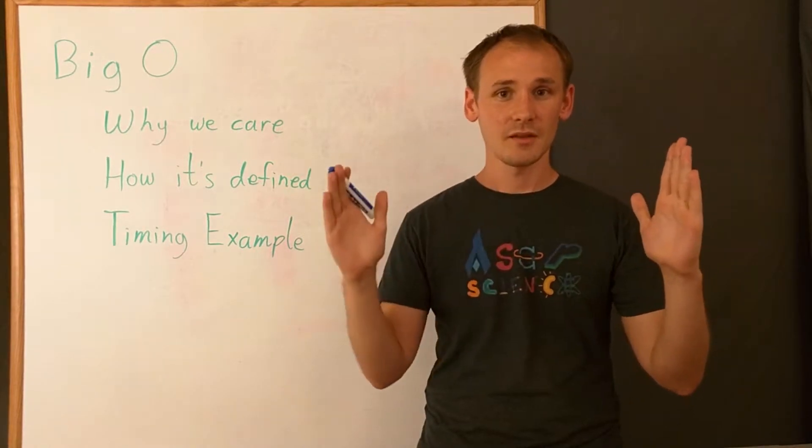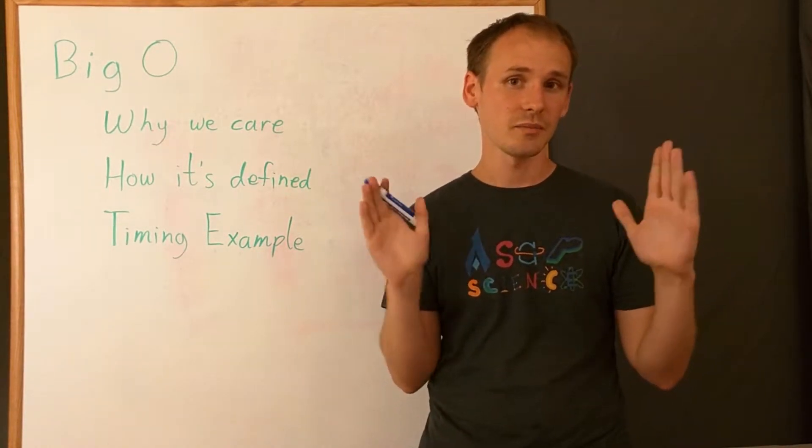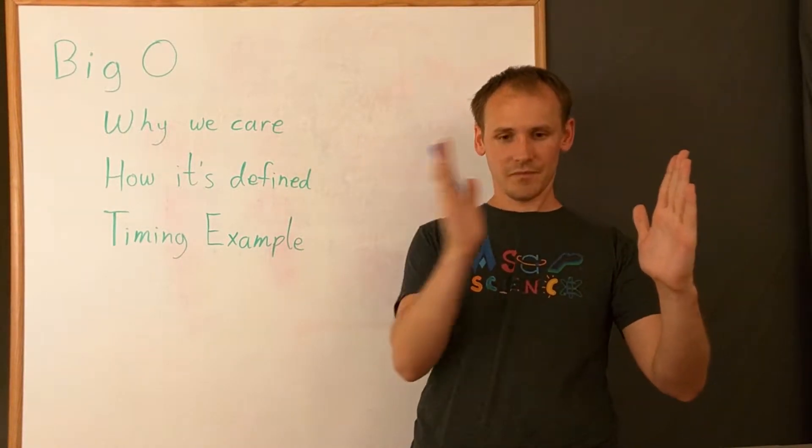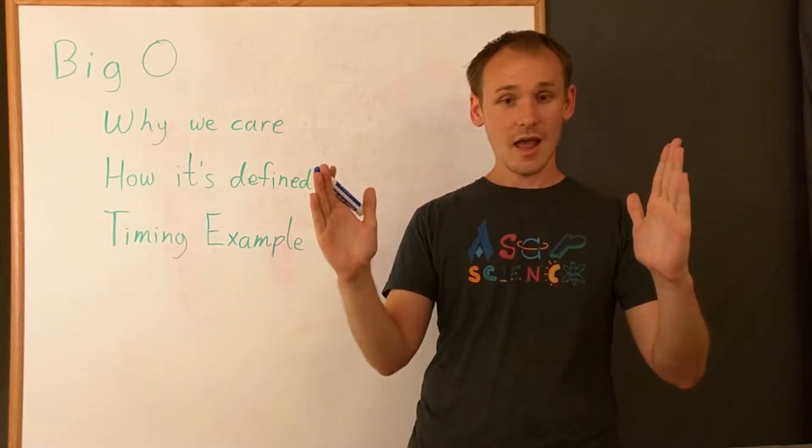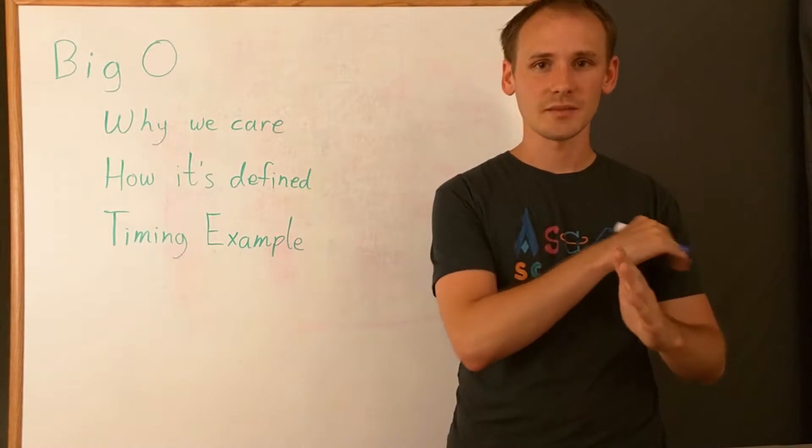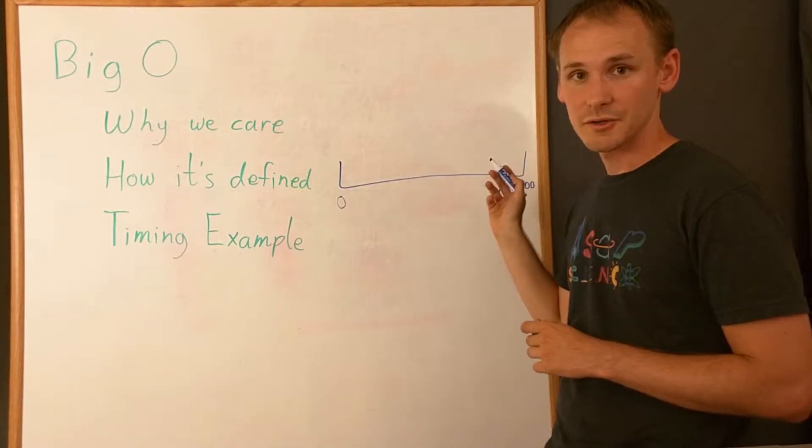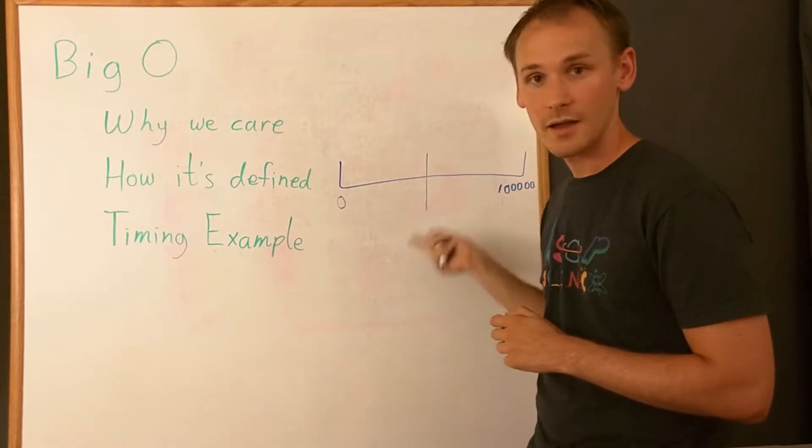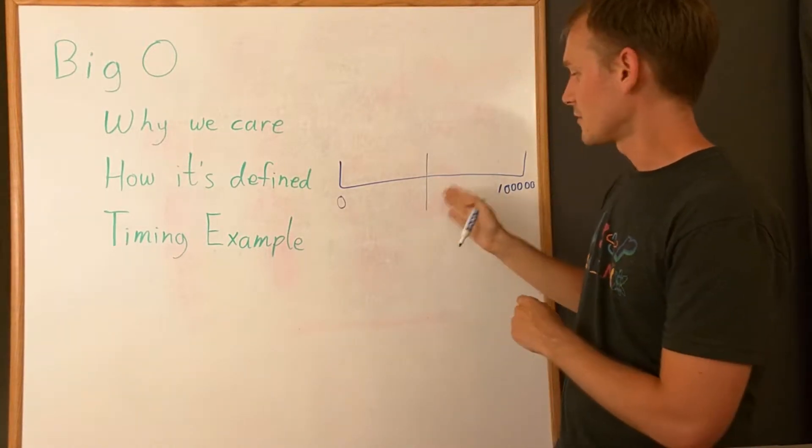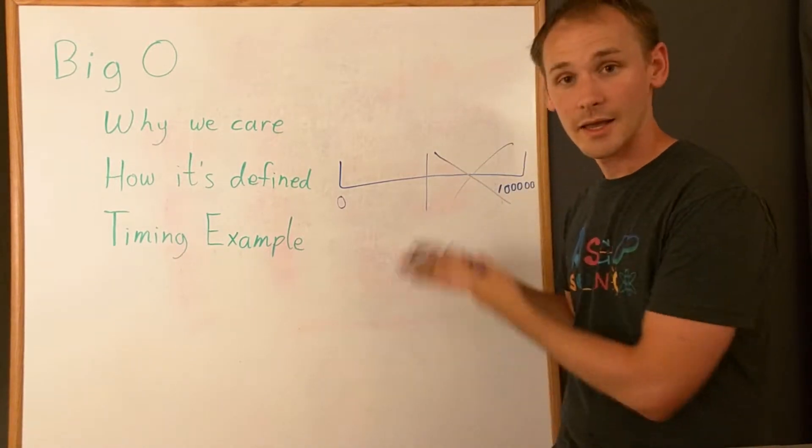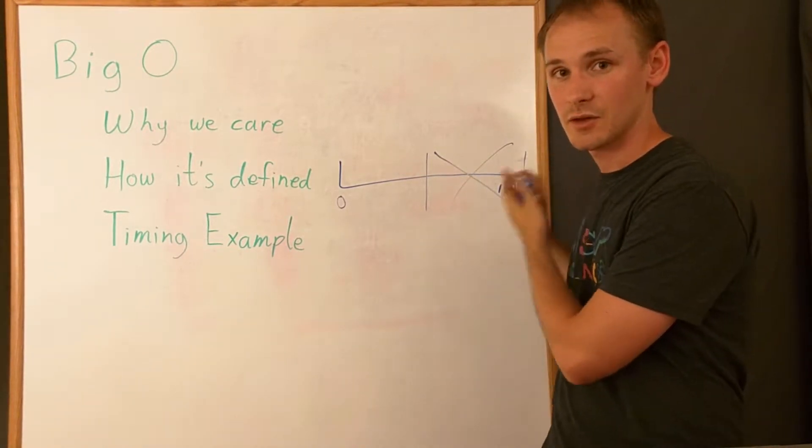So I can check the middle. And if I'm looking for a word like cantaloupe, but the word in the middle is melon, then I know that if melon is right here, I don't have to care about everything past melon. If this represented all my words from zero to a million, I can just check right in the middle. And if this is melon, but I'm looking for cantaloupe, I know that I can completely ignore this whole side.